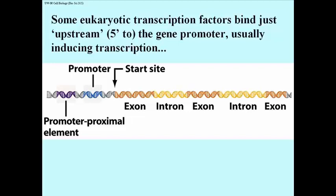And then just upstream — and this could be 20, 30, 40, 50 nucleotide pairs upstream, to the left of the gene — would be a promoter proximal DNA sequence, a promoter proximal regulatory element. This is capable of binding some transcription factor that's going to facilitate turning this gene on.